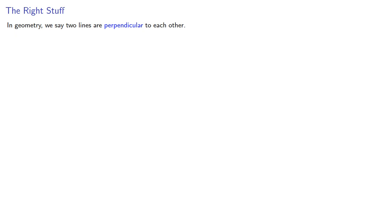In geometry, we say two lines are perpendicular to each other. In higher mathematics, we use the term orthogonal. So when are vectors orthogonal?